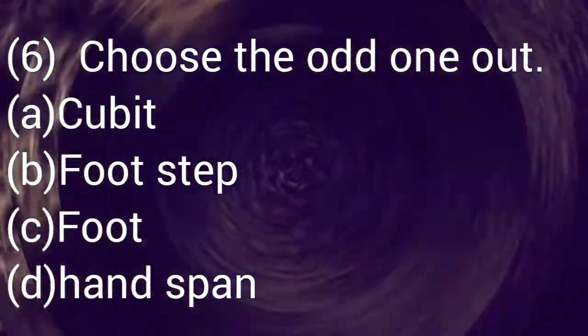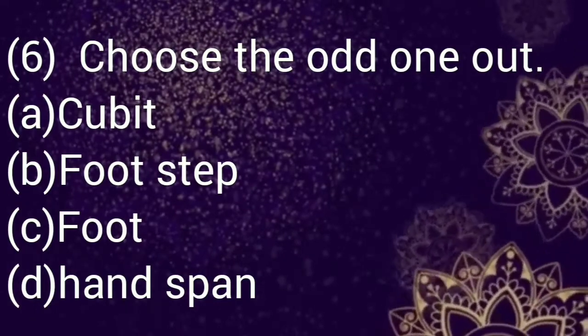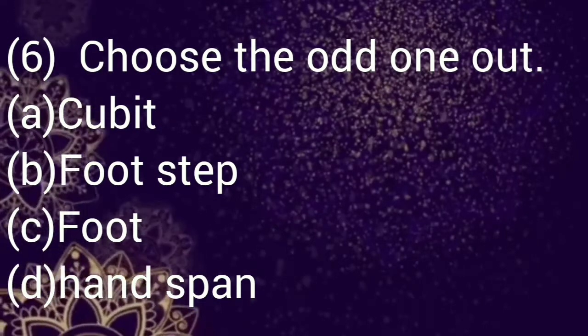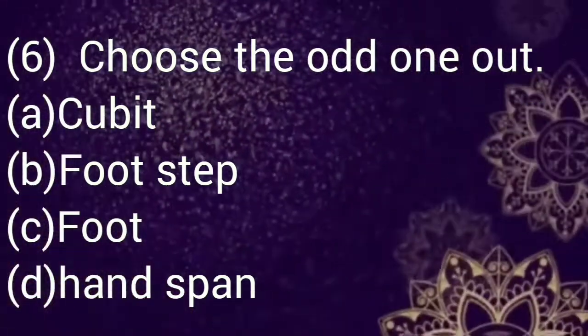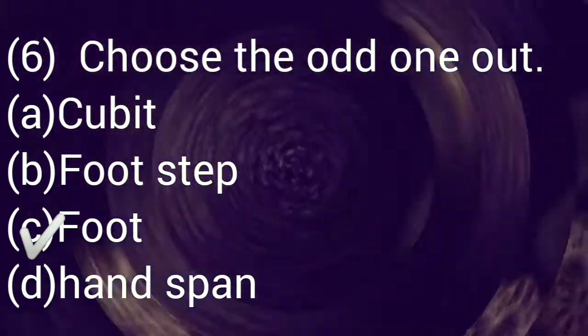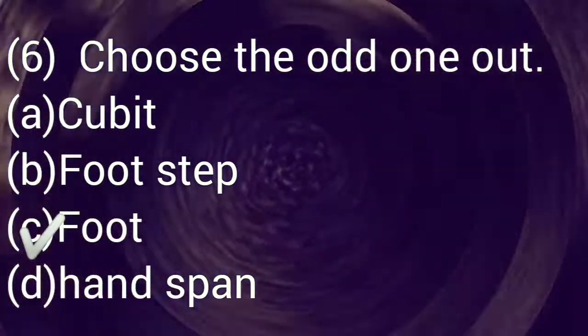So let's move on to question number six. Choose the odd one out: Option a: cubit, b: footstep, c: foot, d: hand span. Select your answer. Correct option is c, foot, as it is only a standard unit. Rest all are non-standard units.